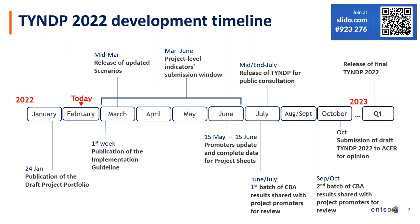Regarding the public consultation on CBA results, this is still being defined. We will for sure consult part of the results, but probably not all at the same time — similar to the review by promoters. The final step in this TYNDP is the submission to ACER for opinion, which will come by the end of October at the latest. That means ACER's opinion would be expected in January 2023, and we would have the final TYNDP in early 2023.